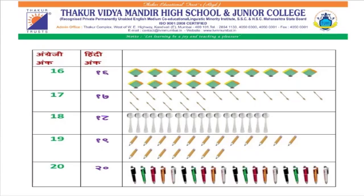हिंदी में २० (bees). कुल पेंसिलें? 1, 2, 3, 4, 5, 6, 7, 8, 9, 10, 11, 12, 13, 14, 15, 16, 17, 18, 19, 20. कुल बीस पेंसिलें।